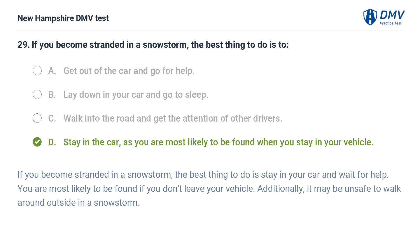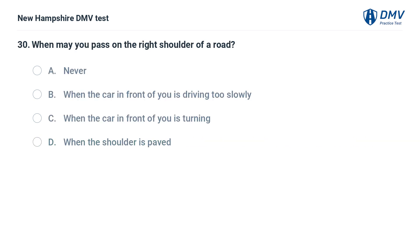When may you pass on the right shoulder of a road? A) never, B) when the car in front of you is driving too slowly, C) when the car in front of you is turning, D) when the shoulder is paved.